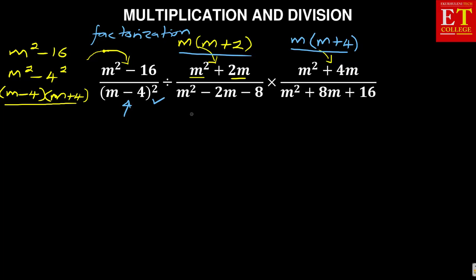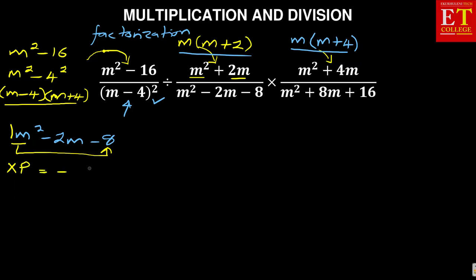Now the two that are remaining: we are given M squared minus two M minus eight. There are many ways you can solve it, but I've got a method which I call the product-sum method, which you can check in the previous videos where I've been explaining it in detail. In this case, if I can do it quickly: there is a one here — if there is no number, the coefficient of M squared means there is a one. So I'm multiplying one M squared times minus eight. My product P is minus eight M squared, and my sum — which is the addition — is the center number, so my sum is minus two M.